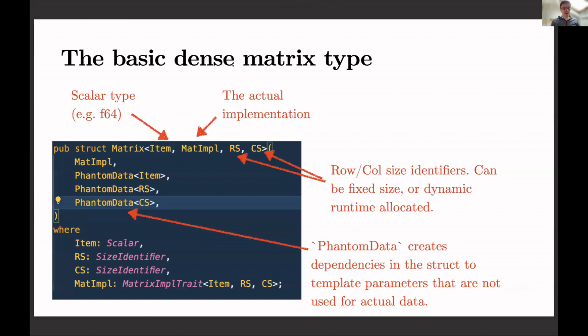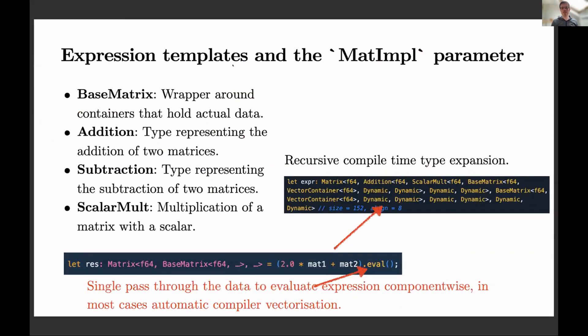So, what is the basic dense matrix data type for us? And so, if you see this, we have a struct Matrix. So, essentially, everything dense fits into the matrix, and the matrix has an item type, and it's got the MatImpl trait. That's the important thing which I'm going to talk about in a second. And then it's got RS, which is the row size identifier and column size identifier. And this can be dynamic or it can be fixed type. For example, when you want to deal with fixed static matrices, we support that as well. So, the important thing about this is the MatImpl trait. And here, where the magic is happening, the expression-like lazy evaluation and Eigen-type expression template arithmetic.